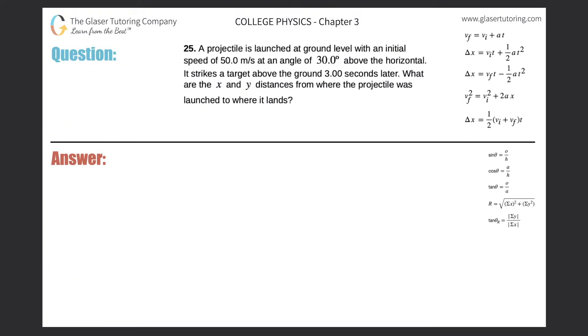Number 25. A projectile is launched at ground level with an initial speed of 50 meters per second at an angle of 30 degrees above the horizontal. It strikes a target above the ground three seconds later. What are the x and y distances from where the projectile was launched to where it lands?